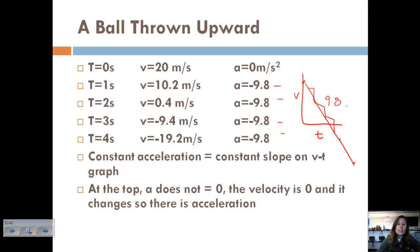So at the top, acceleration does not equal zero at the top of an object's path of motion. But the velocity is zero. And so because it's changing, that still means that you have an acceleration.